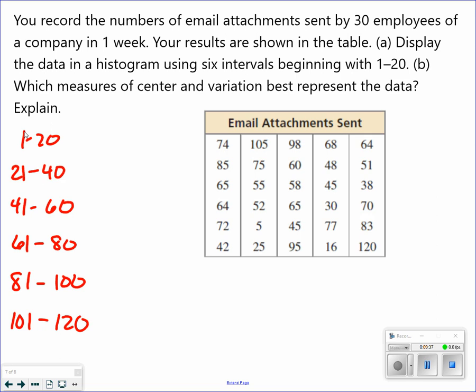All right, so now 74, 85, 65, 64, 72, and 42. I did all the ones in the first column. 105, 75, 55, 52, 5, 25, 98, 60, 58, 65, 65, 95, 65.